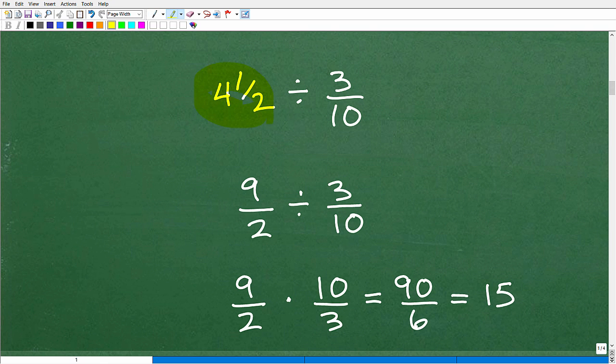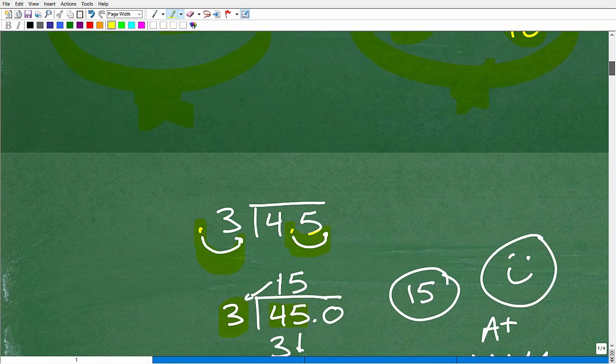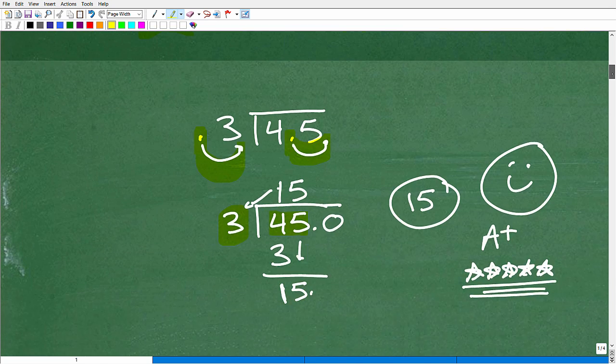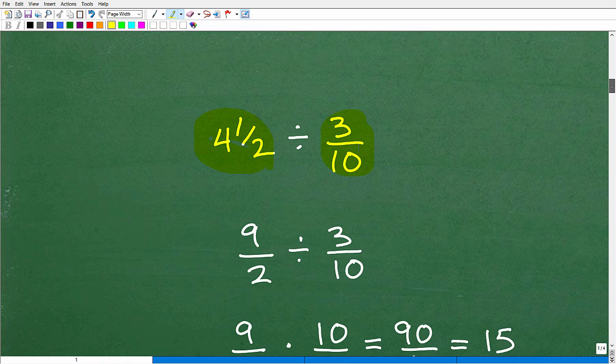we have 4 1/2 divided by 3 tenths. That was the setup. Let me just go back up here and remind you how we set this up, right? So this is 4 1/2 divided by 0.3 or 3 tenths. So this is the problem that we're doing right now, okay? All right, so first things first. First thing, I have 4 1/2.